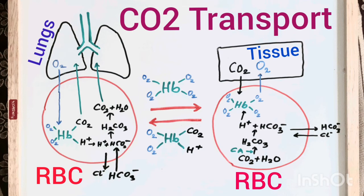At the alveoli, oxygen diffuses into the capillaries again due to its concentration gradient. Oxygen molecules bind with hemoglobin and release carbon dioxide and proton. The carbon dioxide diffuses into the alveoli and is exhaled into the atmosphere. The proton binds with bicarbonate from the plasma, which now enters inside the RBC due to the chloride shift, and forms carbonic acid H2CO3. H2CO3 then dissociates into carbon dioxide and water, and the CO2 diffuses into the alveoli to be exhaled.